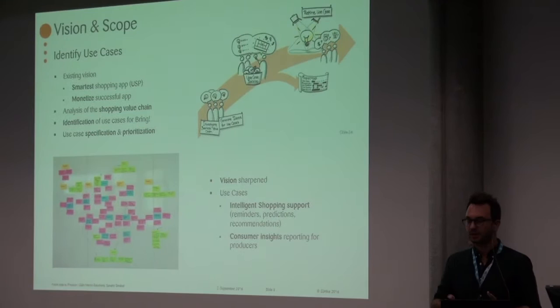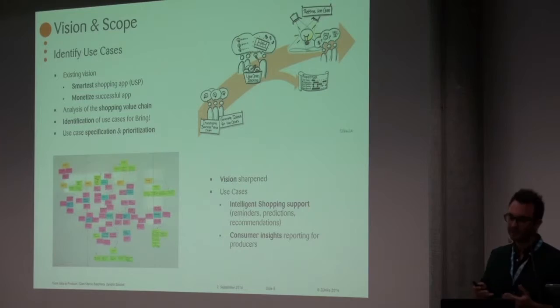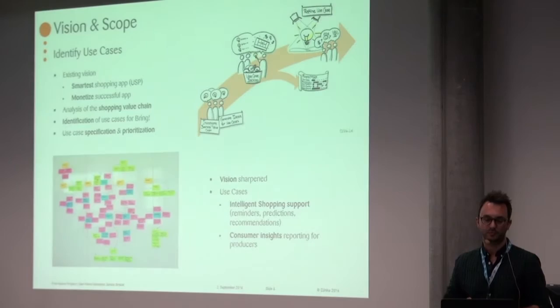Reminders and predictions, for example, could be based on the cycle time of a product. So we can remind you at the right time about needed products and can predict your next best item. And the third use case, recommendations. Here we can analyze millions of baskets and recommend magic products to your basket.